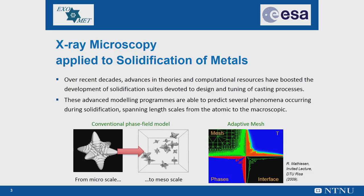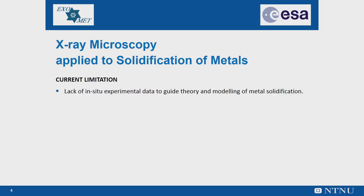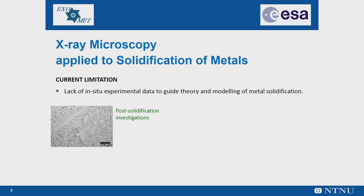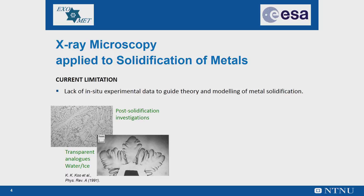While computer simulations have been firmly established, there is a lack of in-situ experimental data to guide the theory and modeling of metal solidification. Experimental methods traditionally used include post-solidification metallographic investigations, either ex-situ after a completed solidification or with alloys that have been quenched or decanted during solidification, to detect transients or coarsening microstructures. Transparent compounds such as HICE have also been extensively used as analog systems studied in-situ under a microscope. However, similarity between the transparent system and the metallic alloy system is not obvious and almost never perfect, since various relevant physical properties differ clearly from those found in metals.